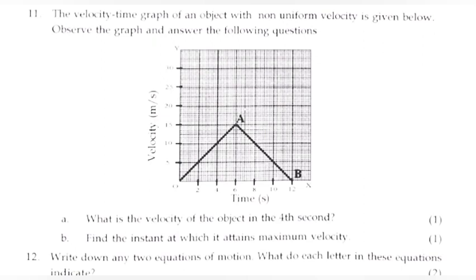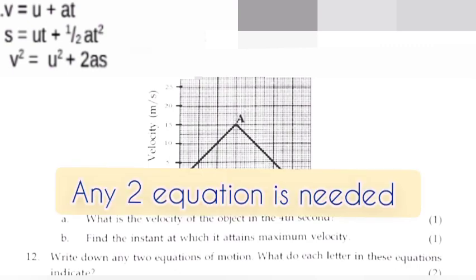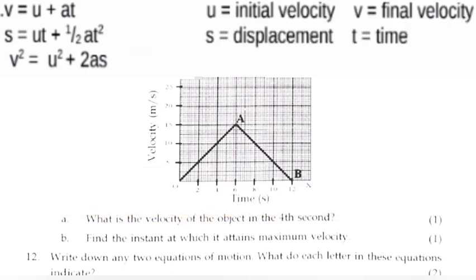Question 12: Write down any two equations of motion. What does each letter in these equations indicate? Answer: v = u + at, s = ut + ½at², v² = u² + 2as. u indicates initial velocity, v indicates final velocity, s indicates displacement, a indicates acceleration, and t indicates time.